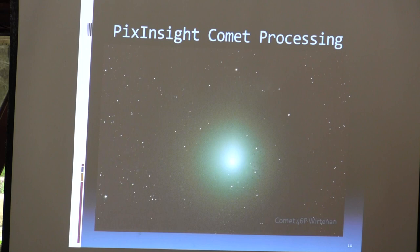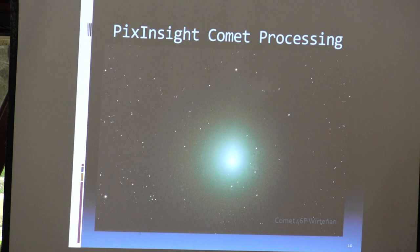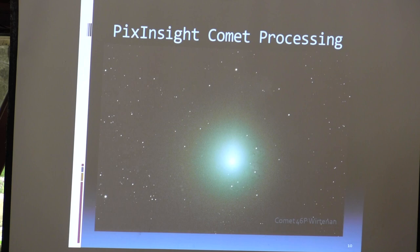Before I go on, are there any questions? The question was: along the path of comet movement, where does it put the comet in the final image? It typically puts it at wherever the first image that you selected was. It superimposes your comet master on top of your star master and puts the comet at the place where the comet was when the first picture was taken. I suppose there are ways you can put it somewhere else, but I haven't investigated that.